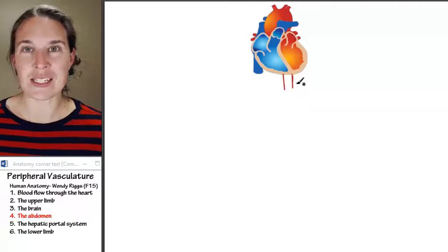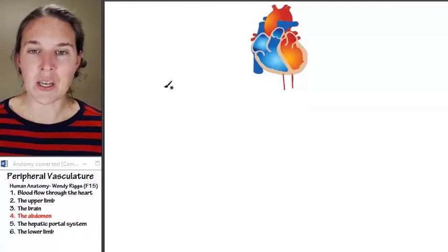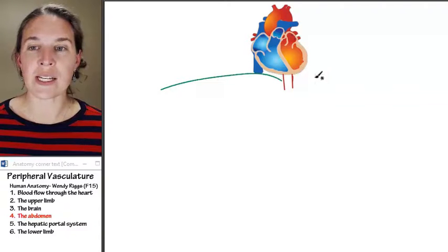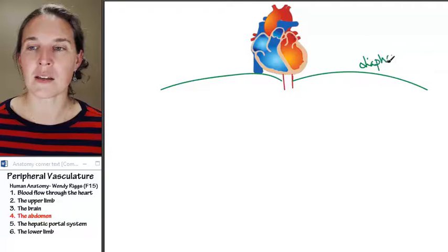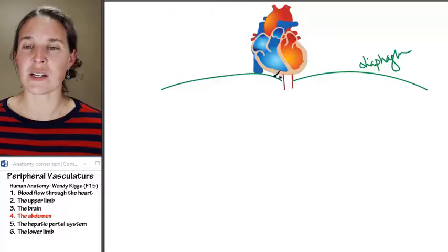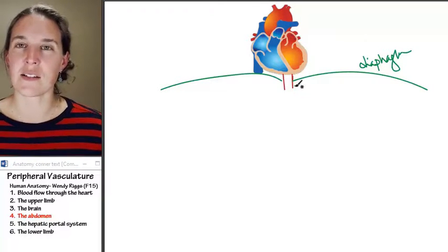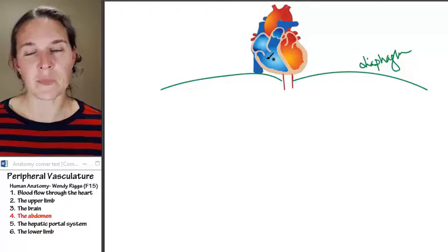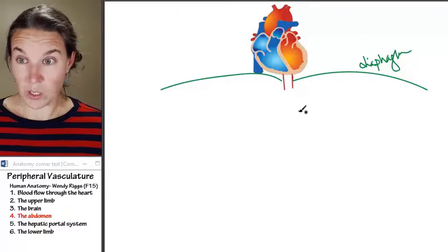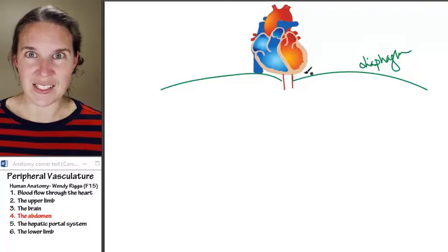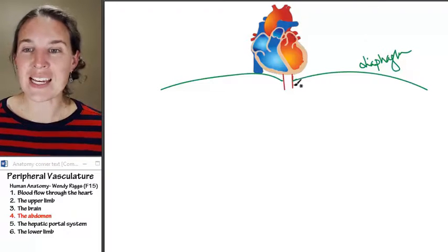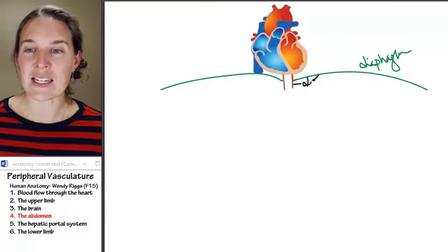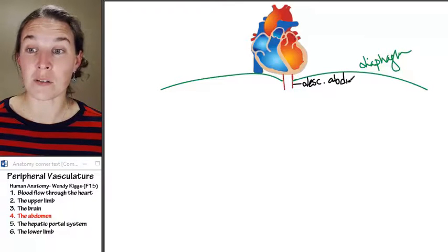Before we know that this is the descending thoracic aorta, I'm drawing a giant green anatomically incorrect diaphragm because, well, maybe that is correct. Does the heart actually sit that closely on the diaphragm? Whatever, it's not important. The important thing is that the thoracic aorta, as soon as it passes through the diaphragm, becomes the descending abdominal aorta.